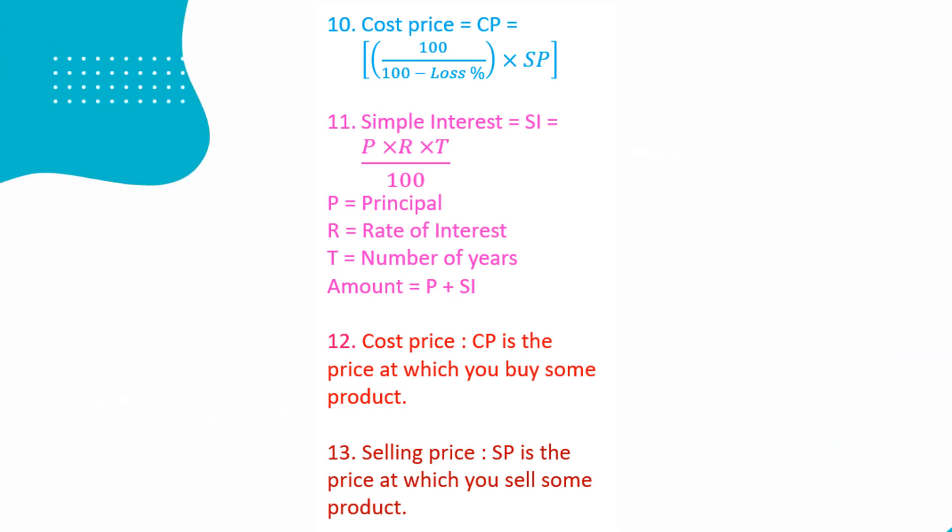Simple interest equal to P into R into T by 100. P equal to principal, R equal to rate of interest, T equal to number of years.